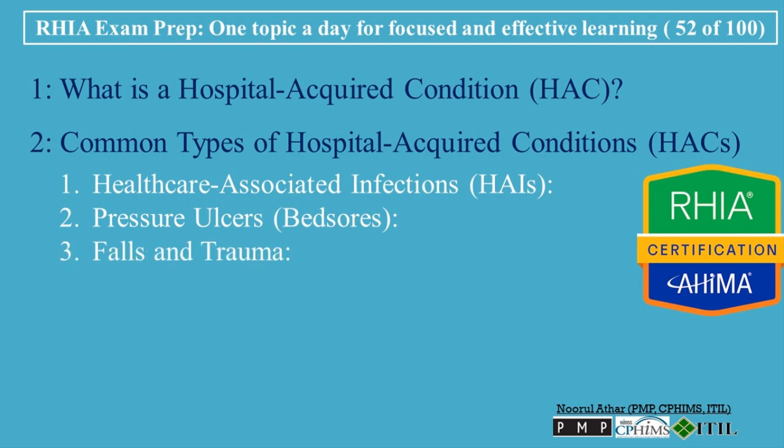Falls and Trauma: Patients, especially the elderly or those with mobility issues, are at risk of falls while in the hospital. Falls can lead to fractures, head injuries, and other serious complications. Hospitals must implement fall prevention strategies to reduce the risk of injury. Venous Thromboembolism, VTE, which includes deep vein thrombosis, DVT, and pulmonary embolism, PE, is a blood clot that can develop during a hospital stay due to immobility or certain medical procedures. Preventative measures such as blood thinners and encouraging patient mobility can help reduce the risk of VTE.